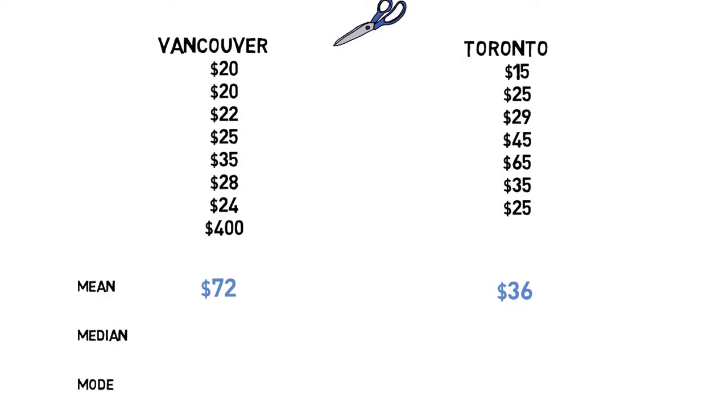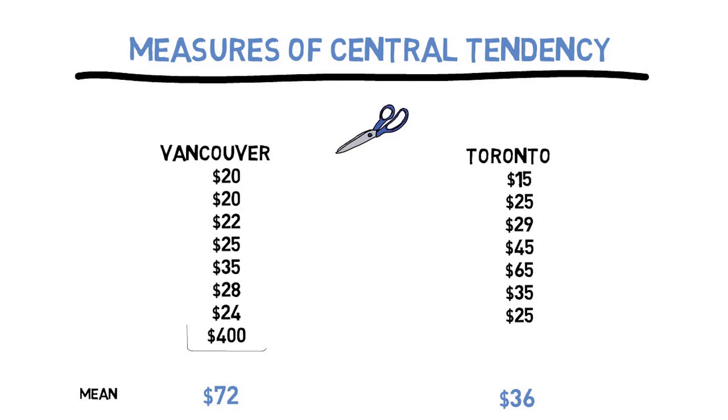The problem is that we included one posh salon in Vancouver where they charge $400, which greatly increases the average value. If we remove this outlier, the average for Vancouver would be $25, which is actually less than Toronto. And I'd also like to assure you that I do not spend $400 per haircut. And actually, I cut my own hair.